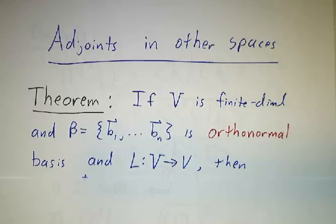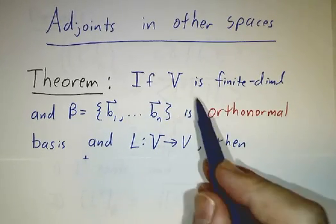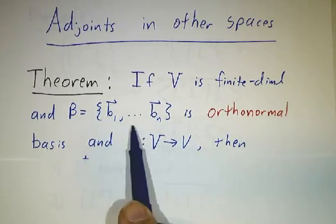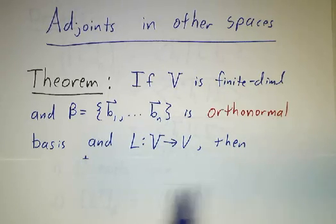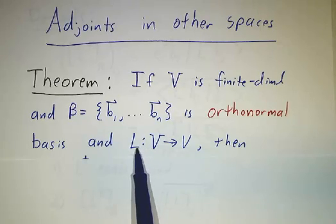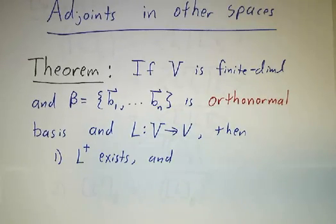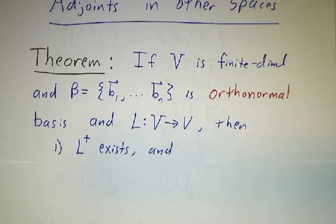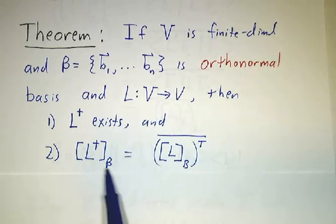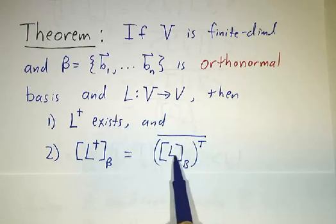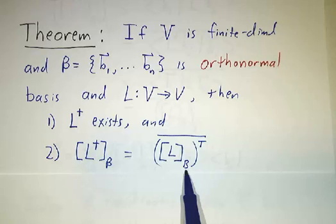So here's the big deal. If you have a finite dimensional vector space and you have an orthonormal basis, not just an orthogonal basis but orthonormal, and if we have an operator, then first of all, the adjoint always exists. And secondly, the matrix of the adjoint relative to this basis is the transpose conjugate of the matrix of the original operator relative to this basis.